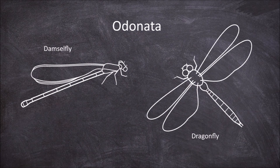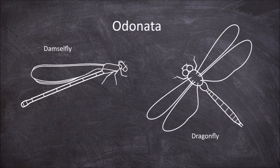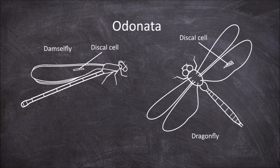Damselflies are much smaller overall and their bodies are longer and skinnier. Dragonflies are much larger and have a thick stocky appearance. The final difference is seen in the wings and that is in the discal cell. In damselflies the discal cell is quadrilateral and undivided. In dragonflies the discal cell is divided into triangles.